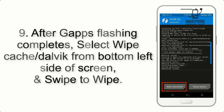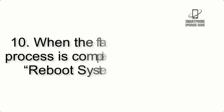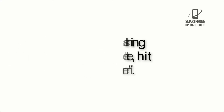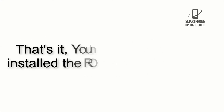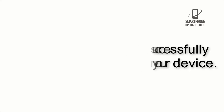Step 8: Flash the GApps zip package in the same manner. Step 9: After GApps flashing completes, select Wipe Cache and Dalvik from the bottom left side of the screen and swipe to wipe. Step 10: When the flashing process is complete, hit Reboot System. That's it — you have successfully installed the ROM on your device.